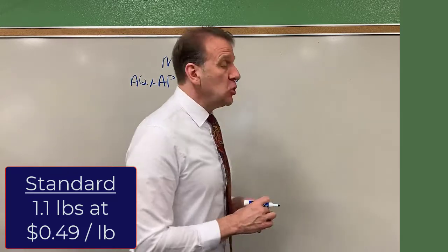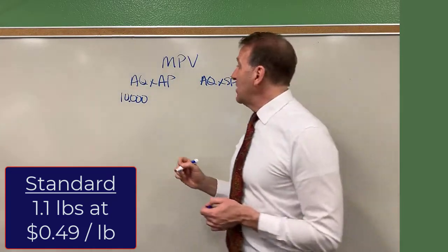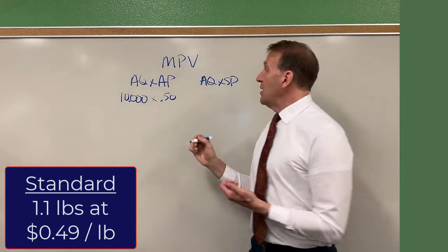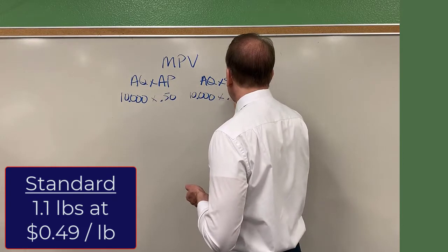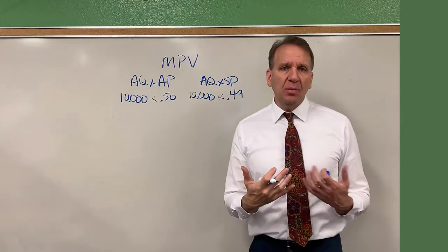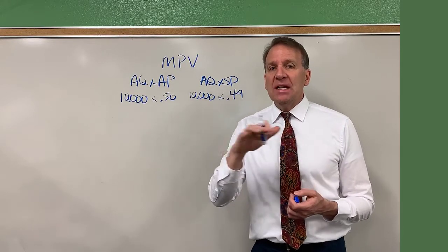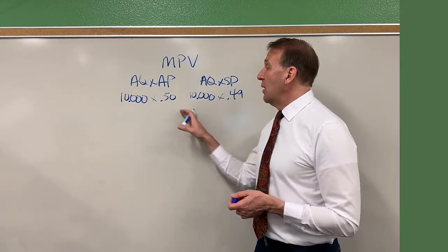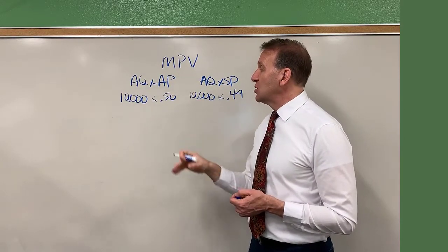Now let's assume that we actually purchased 10,000 pounds of tomatoes and our actual price was 50 cents. When we did our budgeting, we used 49 cents because we thought that's what the price was going to be. Prices of commodities change — tomatoes don't always stay at 49 cents. We thought they were going to be 49 cents on average, but prices can go up and down. So during this time period, the price was actually 50 cents.